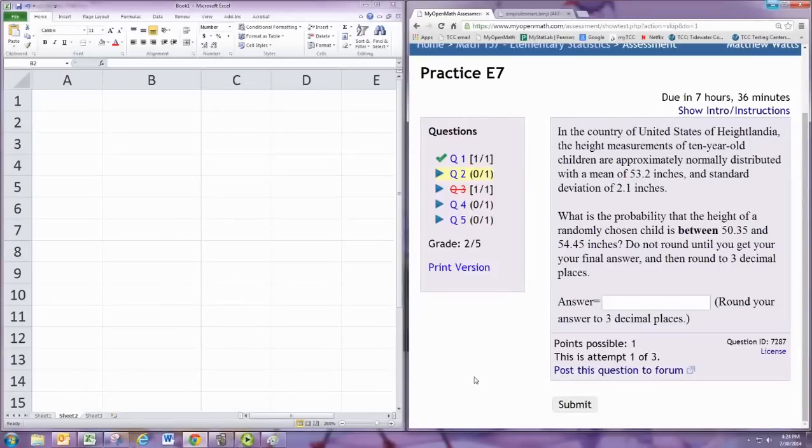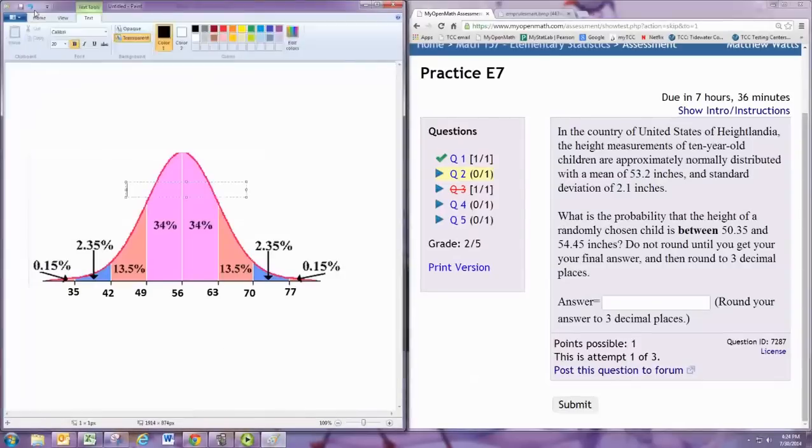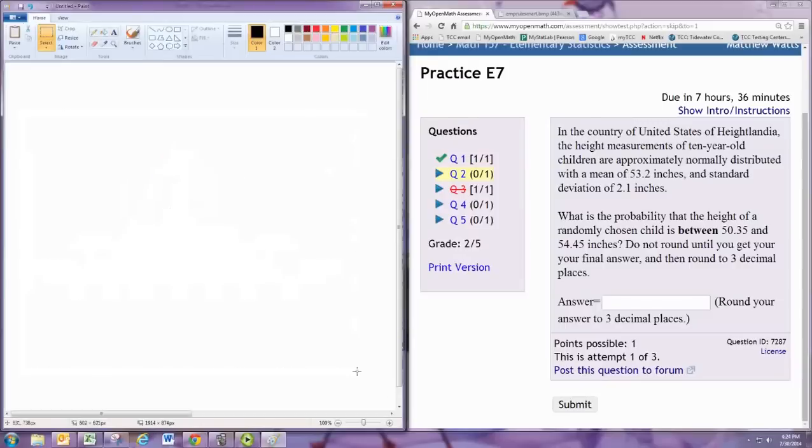What is the probability that the height of a randomly chosen child is between 50.35 and 54.45? We can't directly find this with the spreadsheet software, but here's what we're going to do.